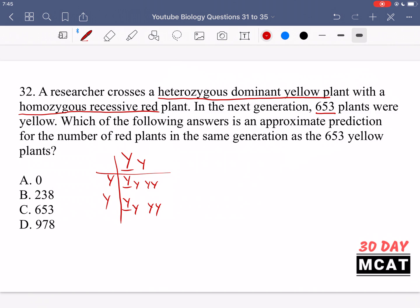Therefore, the other half have to be red. And we're asked how many red plants do we get. So the other half are red. If it's a half to half ratio, if it's a one to one ratio, that means that we got 653 yellow plants, we also got 653 red plants. So C is the correct answer to this question.